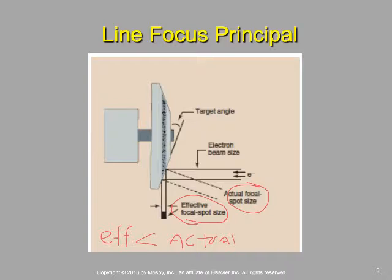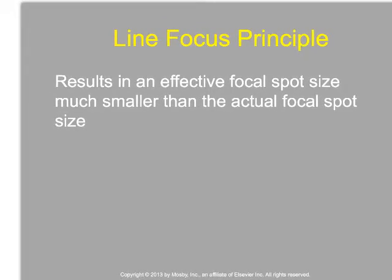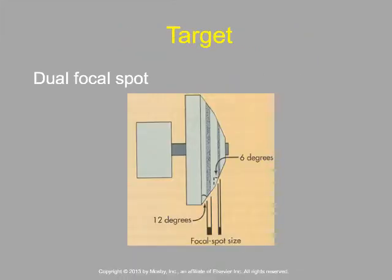The line focus principle produces an effective focal spot size much smaller than the actual focal spot. That filament originally maybe a half or one centimeter — the effective focal spot is going to be in millimeters. There are dual focal spots on the anode to match the dual filament sizes, with slightly different angles for each — perhaps a smaller degree angle for the small filament and a 12-degree angle for the large focal spot.